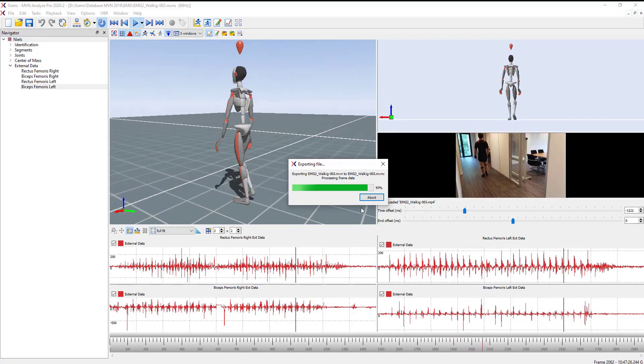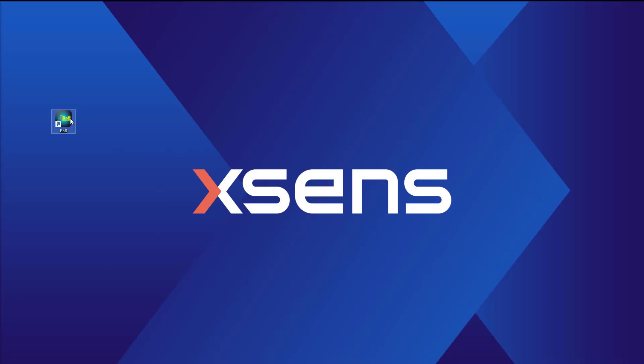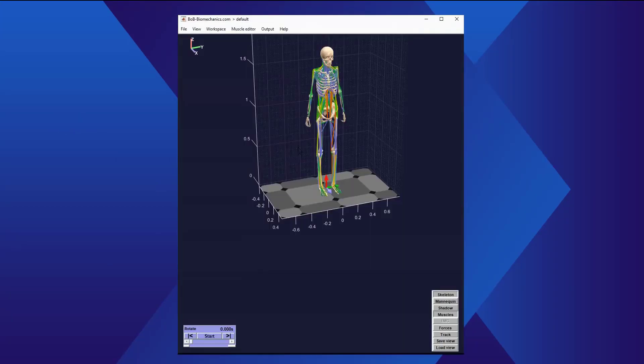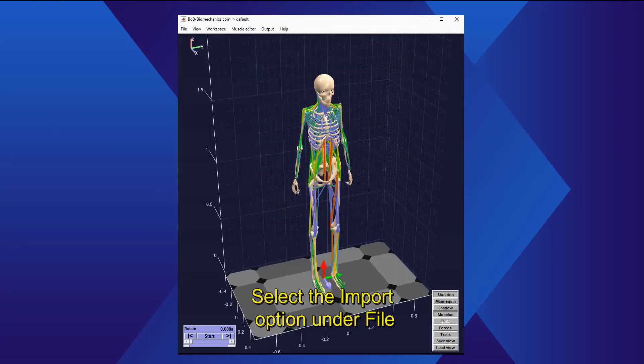After the export has finished, open the Bobbiomechanics software. Select the import option under File.